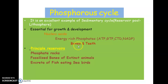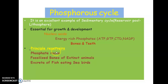Apart from that, phosphorus is needed for the proper development of bones and teeth. So the main uses of phosphorus are: formation of nucleic acids, formation of energy-rich phosphates, and proper functioning of bones and teeth. The principal reservoirs of phosphorus are phosphate rocks, fossilized bones of extinct animals and plants, and the excreta of fish-eating seabirds.